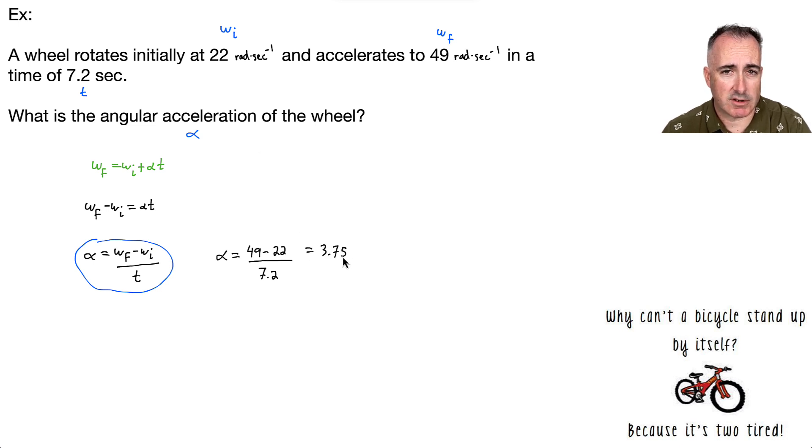So I'm going to say that equals 3.75. How many significant figures am I allowed? I'm allowed 2. So I'll say, therefore, alpha will be approximately equal to 3.8. And what are the units for it? It's radians per second squared. So there we go. There's our final answer. We have our angular acceleration.